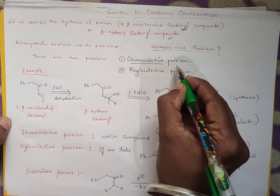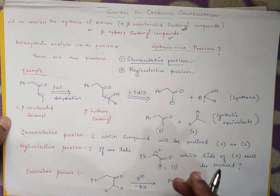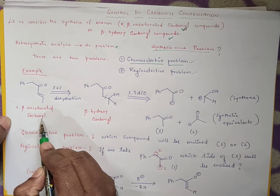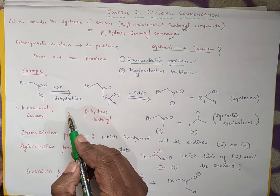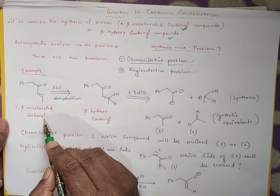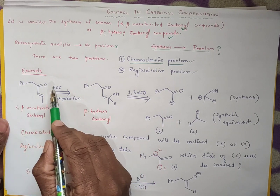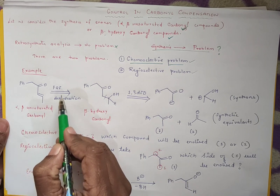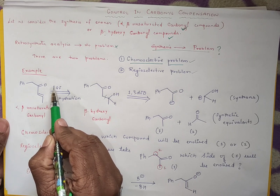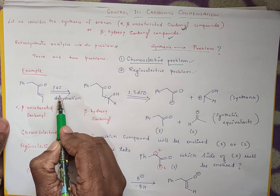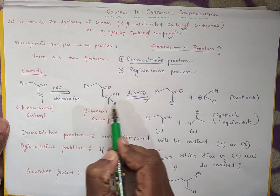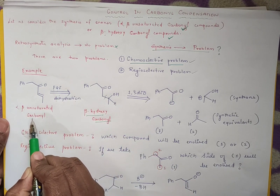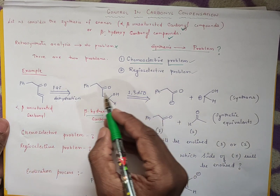As we know, what do you mean by chemoselective problem? I will take one example. This is an alpha-beta-unsaturated carbonyl compound. So those who have not understood the disconnection of alpha-beta-unsaturated carbonyl compound and beta-hydroxy, you can just understand by this example. So alpha-beta-unsaturated carbonyl compound can be disconnected. First, we do the FGI — that is functional group interconversion, that is dehydration. That means when we do the beta-hydroxy carbonyl dehydration, we will get an alpha-beta-unsaturated carbonyl compound.